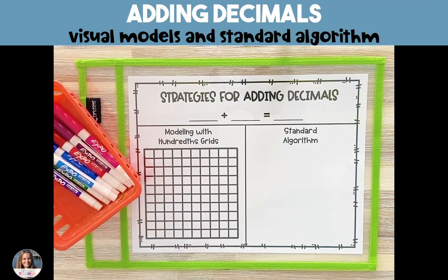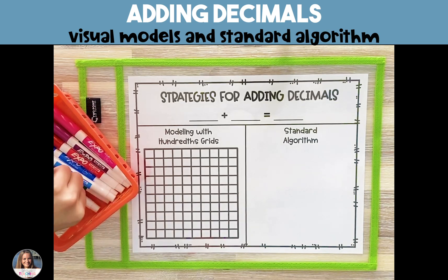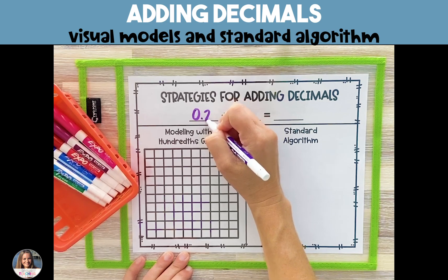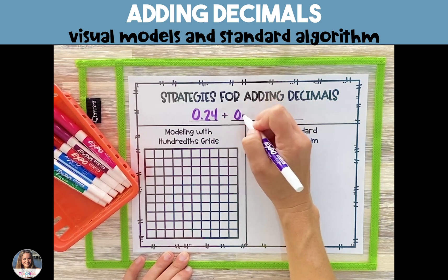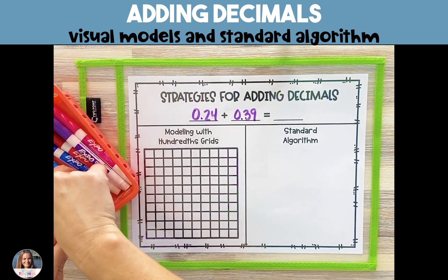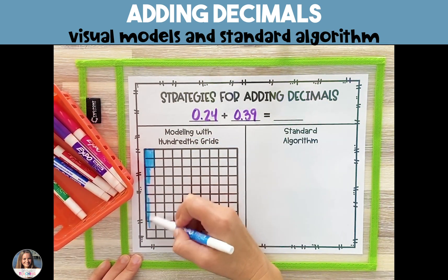I'm going to show you how to add two decimals using a visual model and the standard algorithm. Our visual model consists of a 10 by 10 hundredths grid. There are 10 rows and 10 columns, and there are 100 individual squares that make up the model. Each square is worth 1 one-hundredth of the whole.